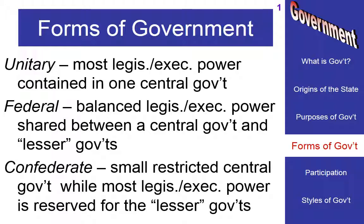Now, confederate was a specific term chosen by the southern states going into the American Civil War because they did not like the idea of the national government telling them what they could do with their states. So they decided to have a confederate style of government, with some cooperation amongst the states and a national government located originally in Alabama, and later moved to Richmond, Virginia, after Virginia left the United States in secession. That was the big discussion during the American Civil War.